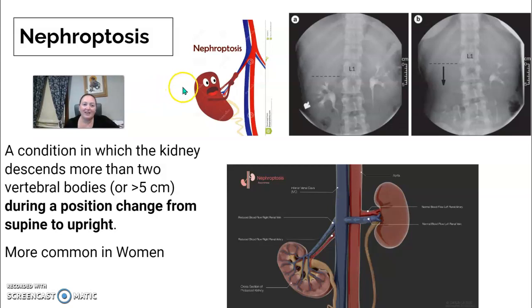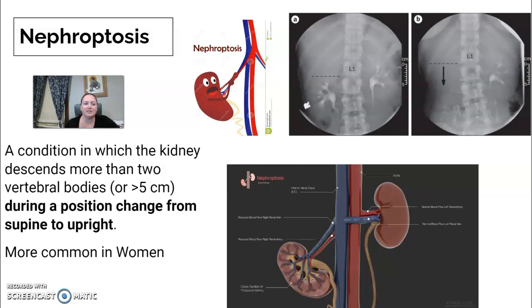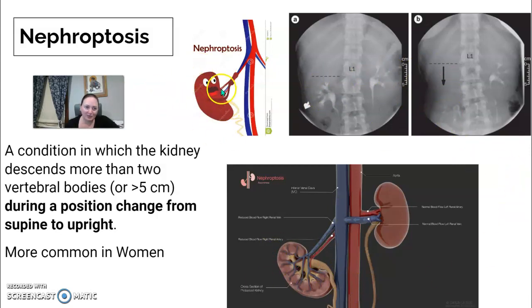Nephroptosis is when the kidney drops or changes position as the patient moves from supine to upright, which is why upright imaging is sometimes important during IVU. It is more common in women. On imaging you can see the kidney descending further down into the pelvis in the upright position compared to supine.